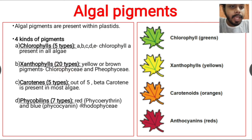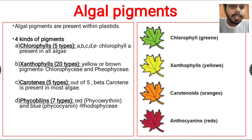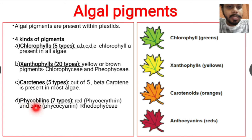Xanthophylls are present in chlorophyceae and phaeophyceae algae, giving yellow or brown pigments, while in chlorophyll they give green pigments. Five types of carotene are present in algae, and beta-carotene is present in most algae. Seven types of phycobalene are present; one type gives red color — phycoerythrin — and one type gives blue color — phycocyanin. Phycobalene pigments are observed in rhodophyceae, or red algae.